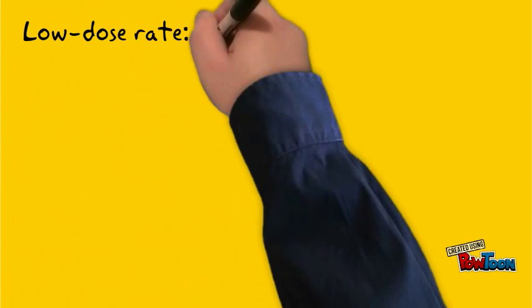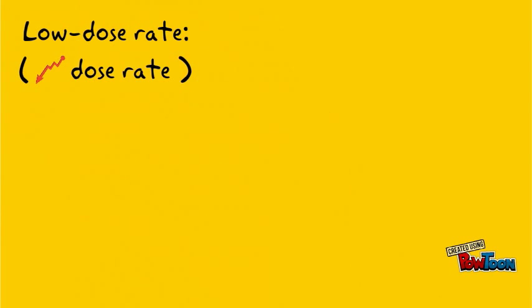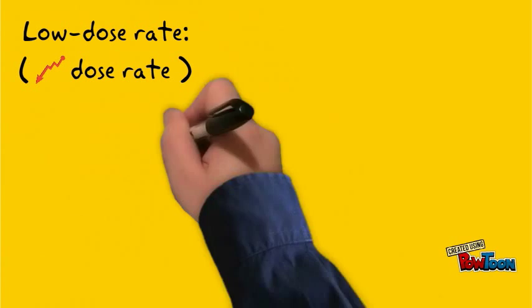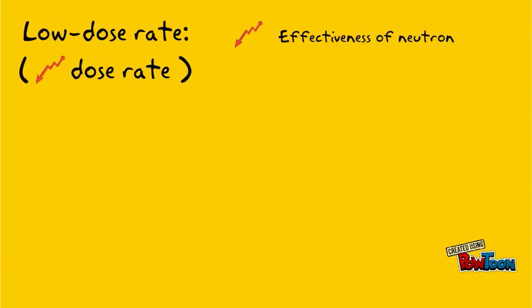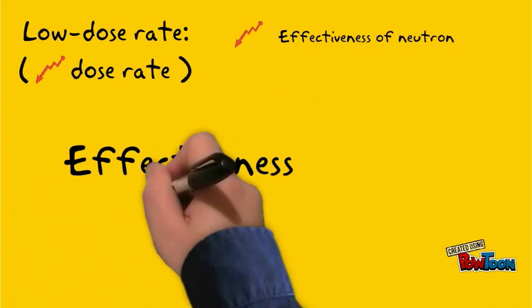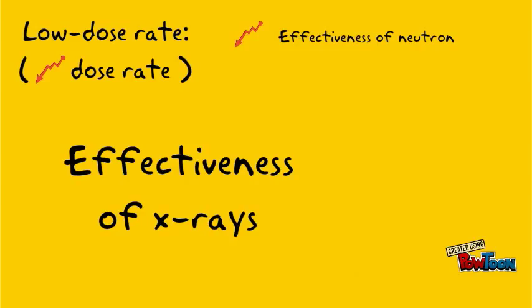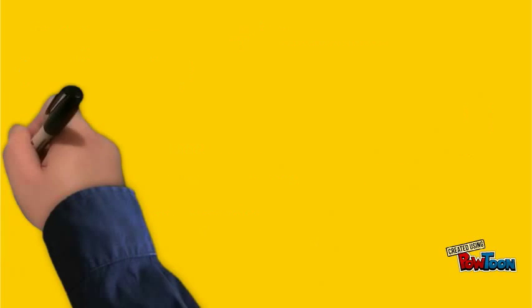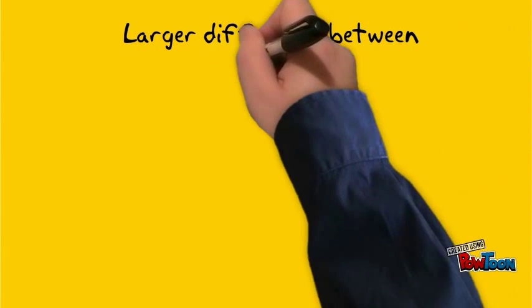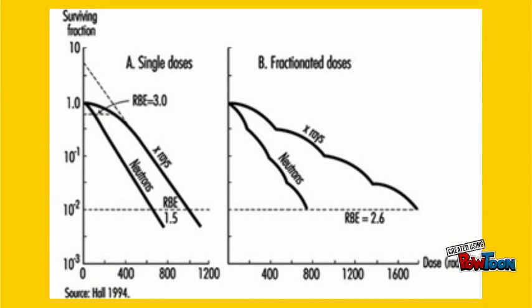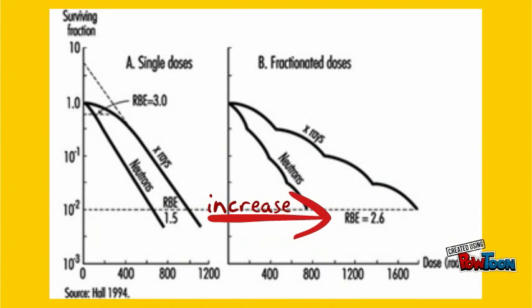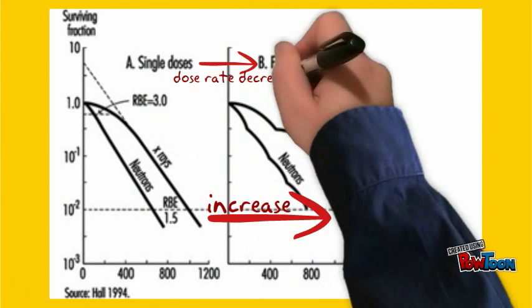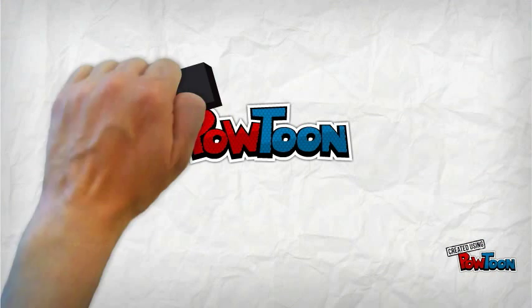Why do we say so? In the low dose rate, as the dose rate decreases, the effectiveness of neutrons decreases. However, the effectiveness of X-rays decreases to a much greater extent, and this results in a larger difference between effectiveness. Therefore, the RBE of neutrons relative to X-rays increases as the dose rate decreases.